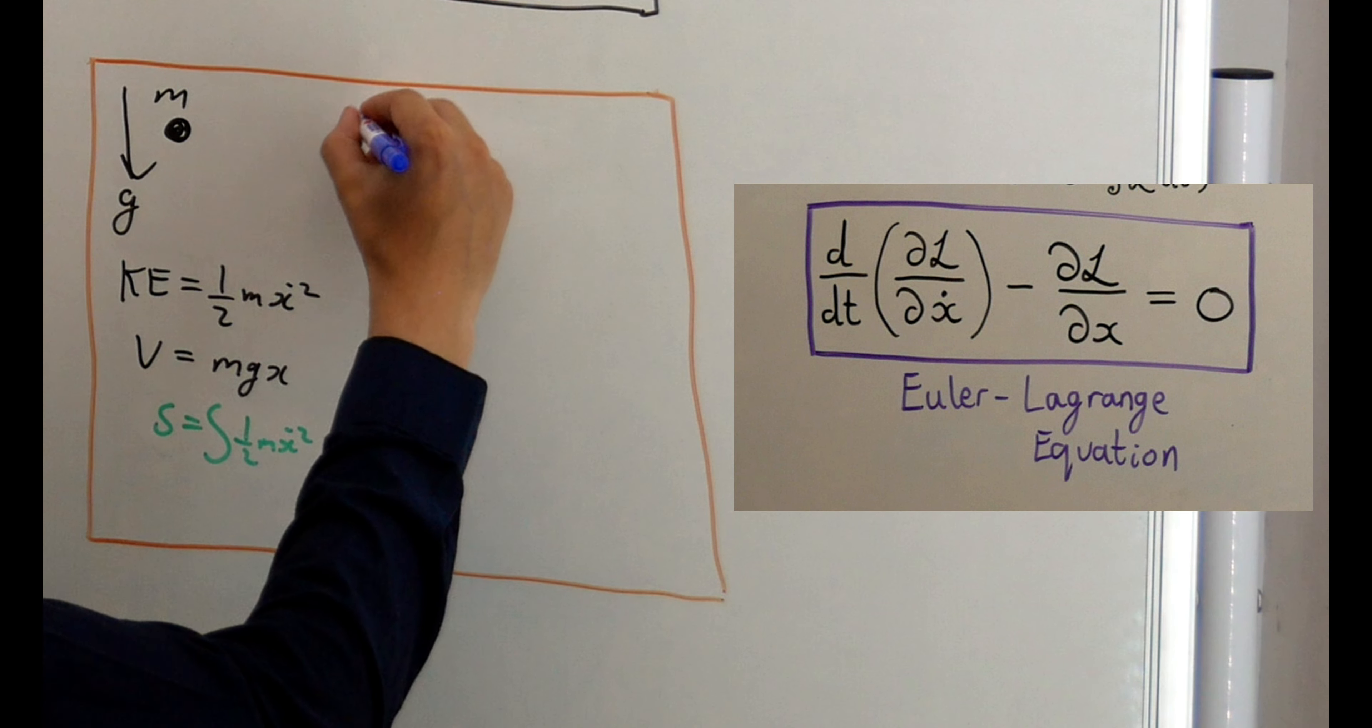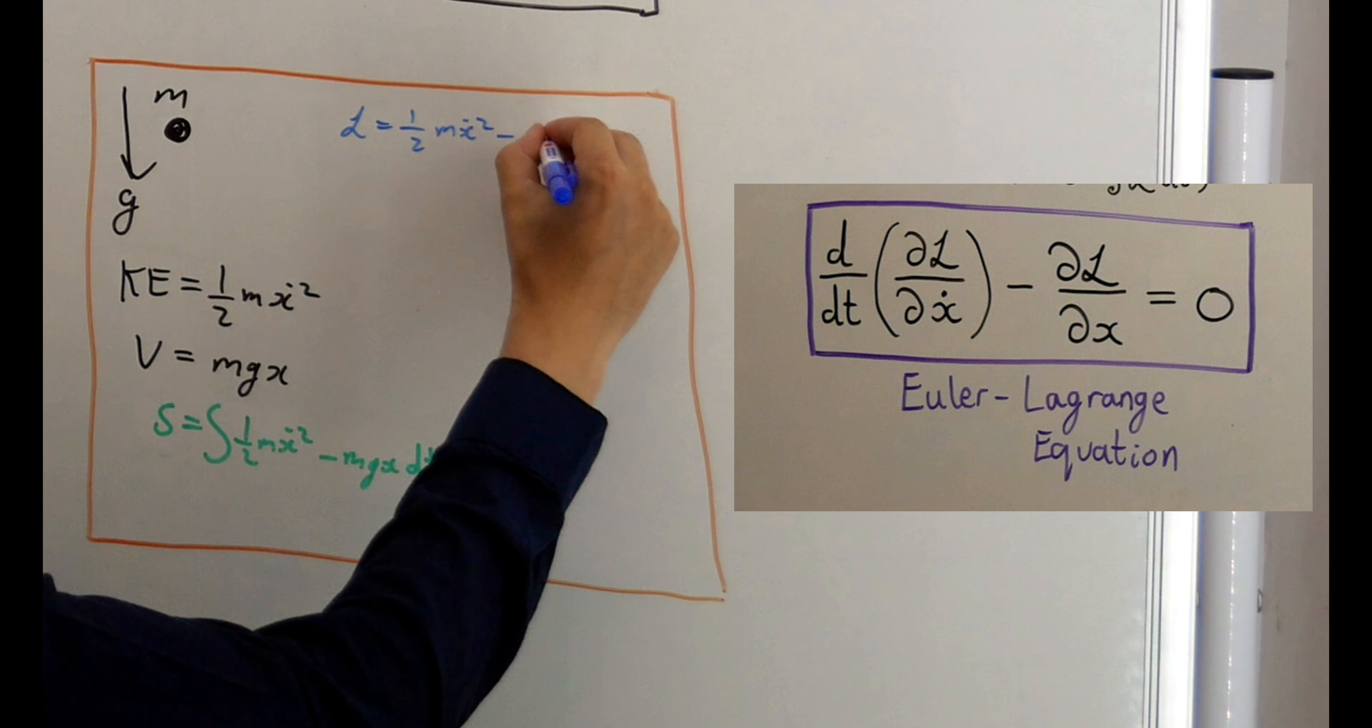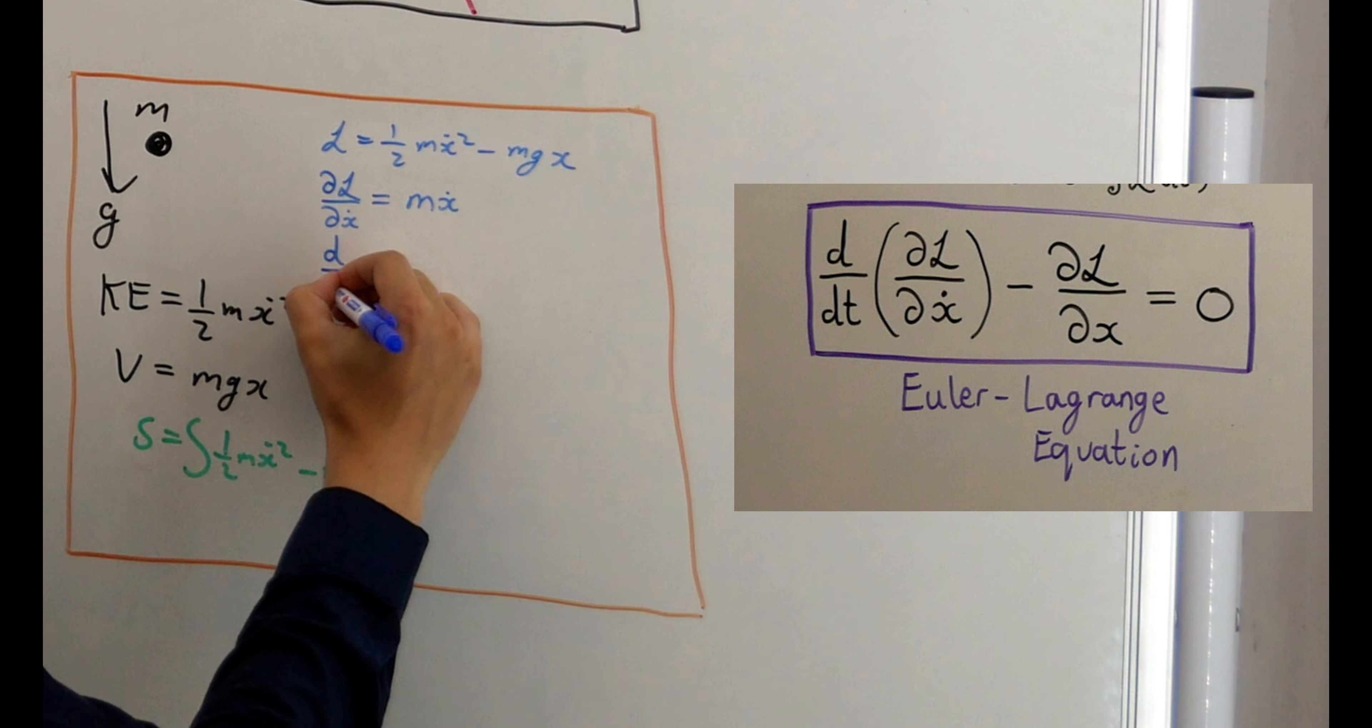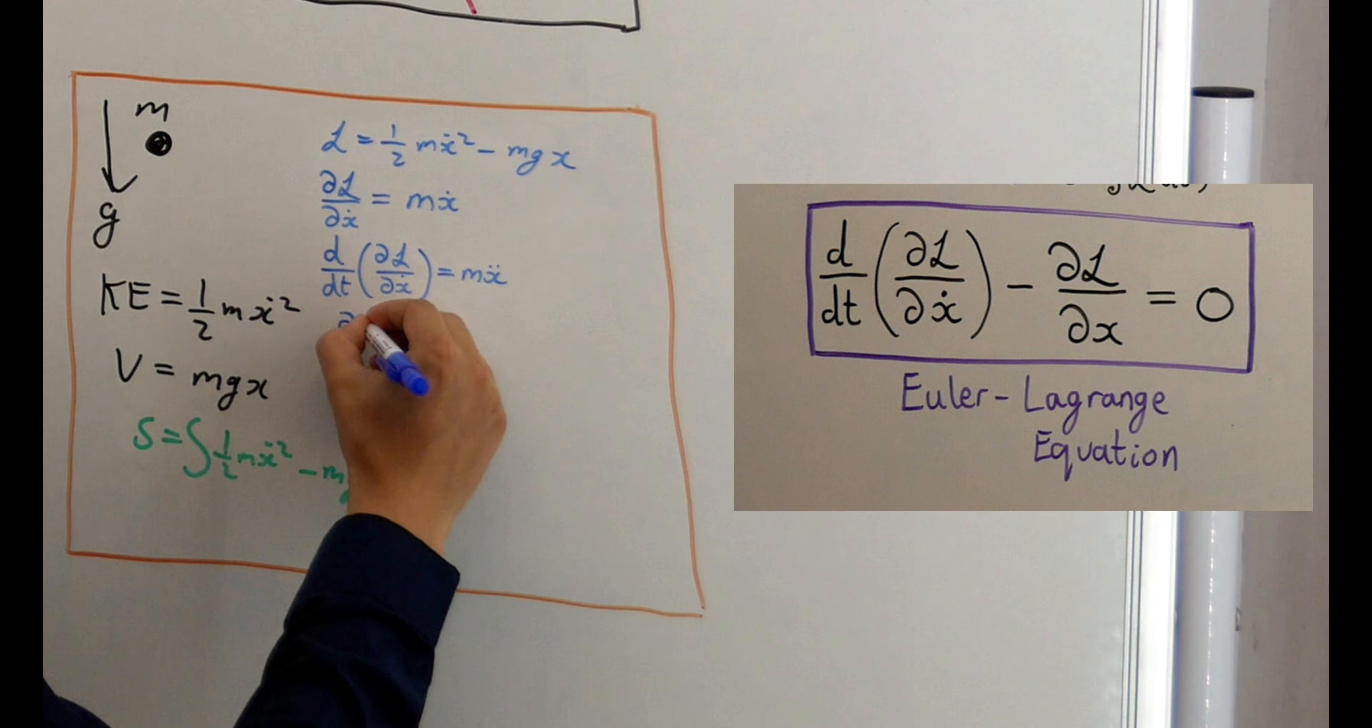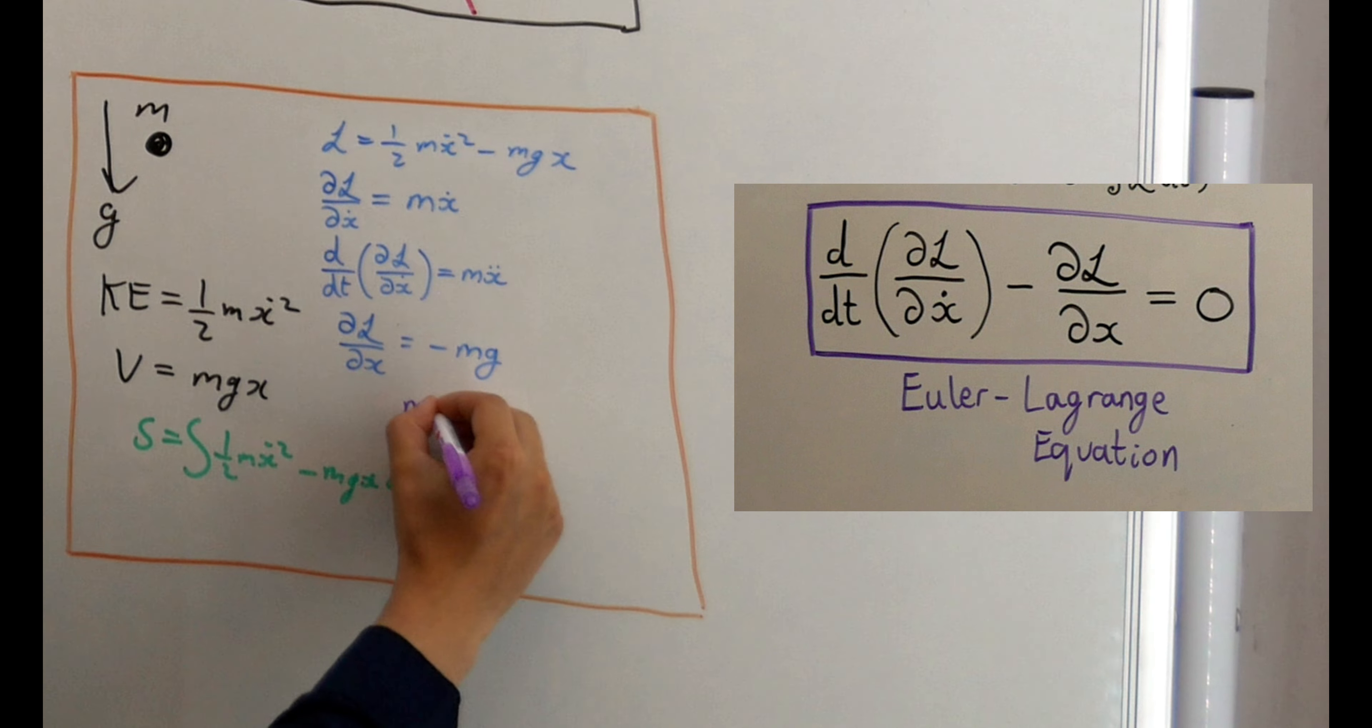Well, our Lagrangian is a half mx dot squared minus mgx. The derivative of the Lagrangian with respect to velocity is given by mx dot. Differentiating this with respect to time, we get mx double dot, which is the mass times the acceleration. The derivative of the Lagrangian with respect to x is minus mg. Putting this all together,